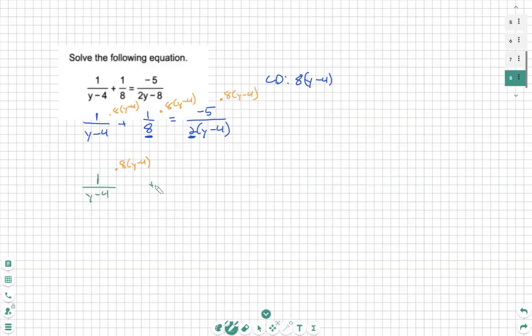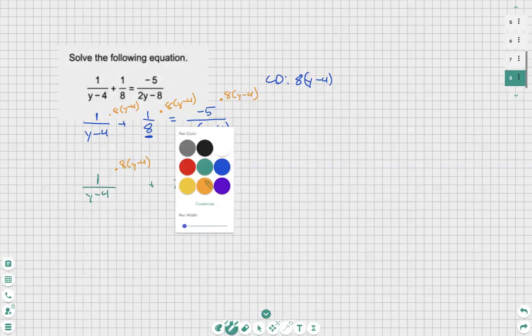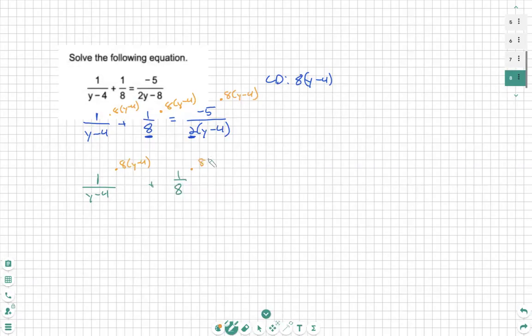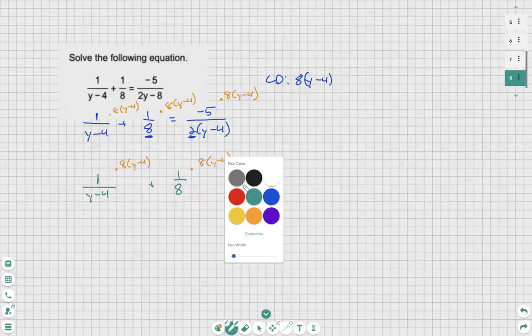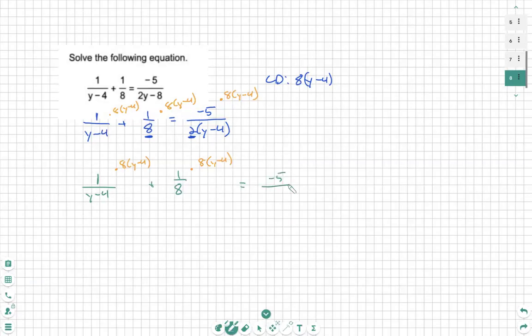Then we have plus 1 over 8, then times 8 times y minus 4. Then equals negative 5 over 2 times y minus 4, times 8 times y minus 4. So all I did was rewrite that.